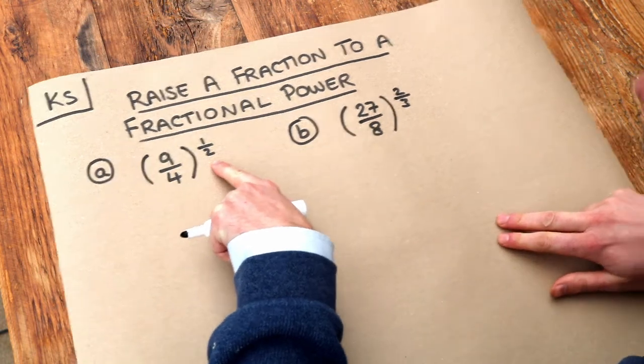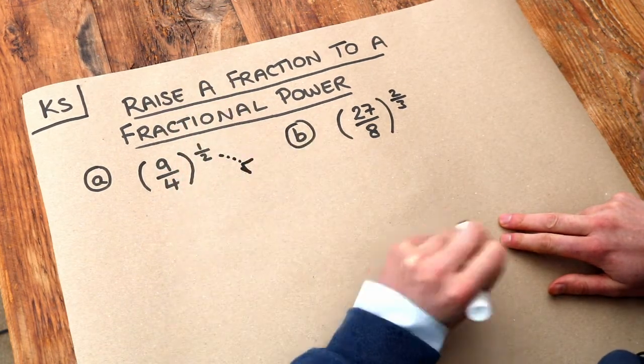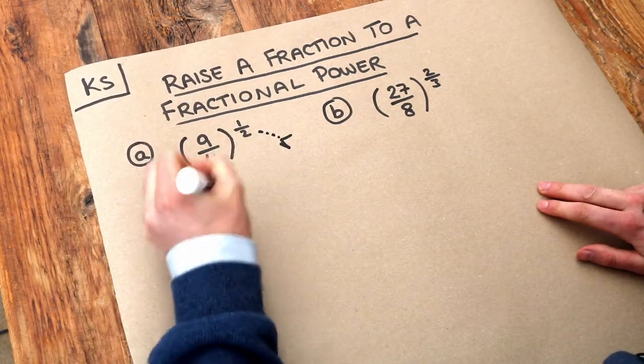Remember that if we had a power of a half, we would square root the number. And that's what we're going to do to this fraction. We're just going to square root that fraction.